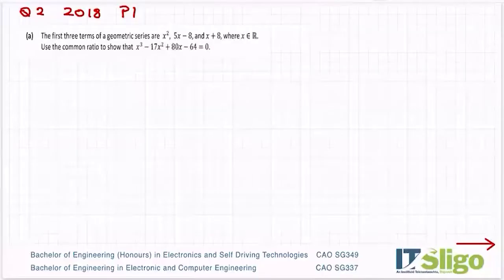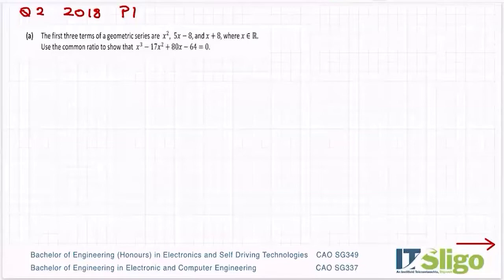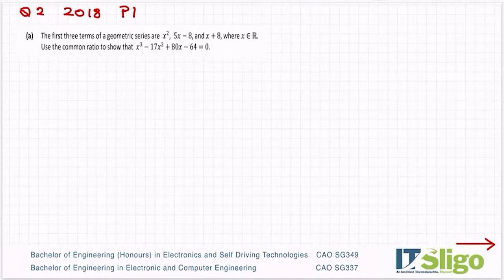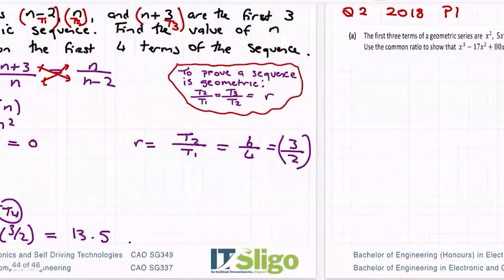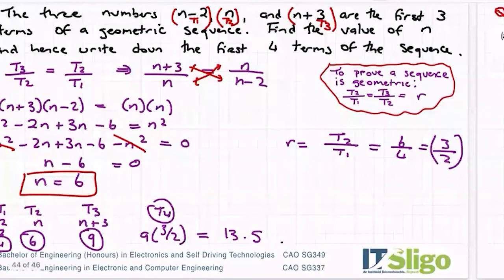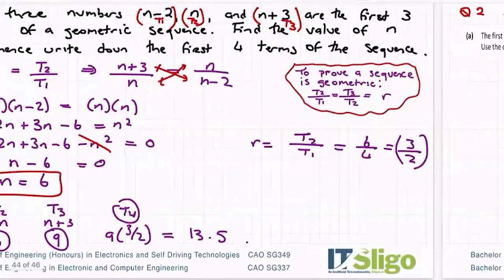Let's have a look at this question on geometric series. It's building on the work we were doing on the theory of geometric series. The first three terms of a geometric series are x squared, 5x minus 8 and x plus 8, where x is an element of ℝ. Use the common ratio to show that x cubed minus 17x squared plus 80x minus 64 is equal to zero.